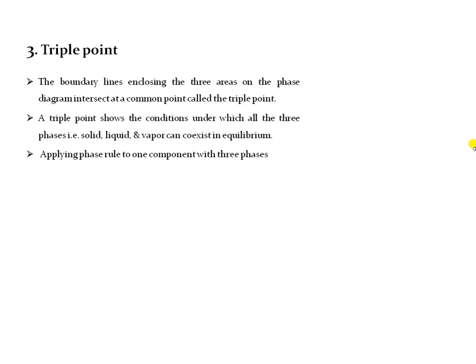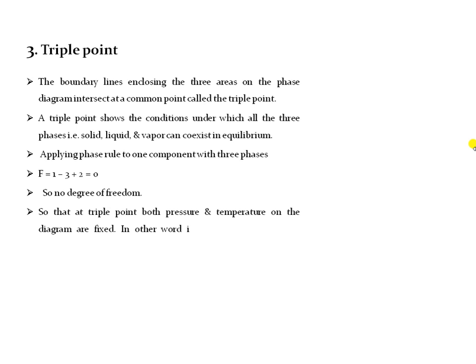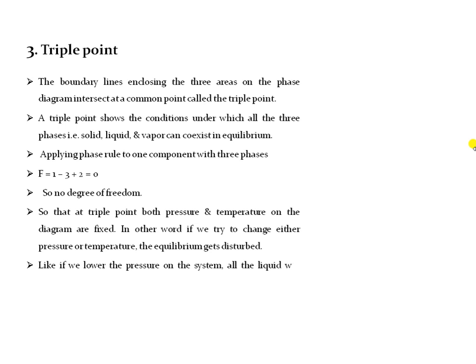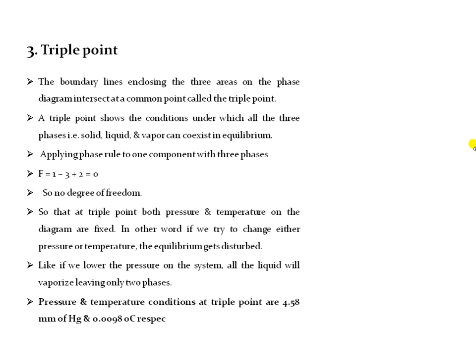Applying the phase rule to one component with three phases, the value of F becomes zero. The system is known as non-variant, so no degree of freedom is there. At the triple point, both pressure and temperature are fixed. If we try to change either temperature or pressure, the equilibrium gets disturbed. For example, if we lower the pressure on the system, all liquid will vaporize, leaving only two phases. The pressure and temperature conditions at the triple point are 4.58 mm of Hg vapor pressure and 0.0098 degrees centigrade.